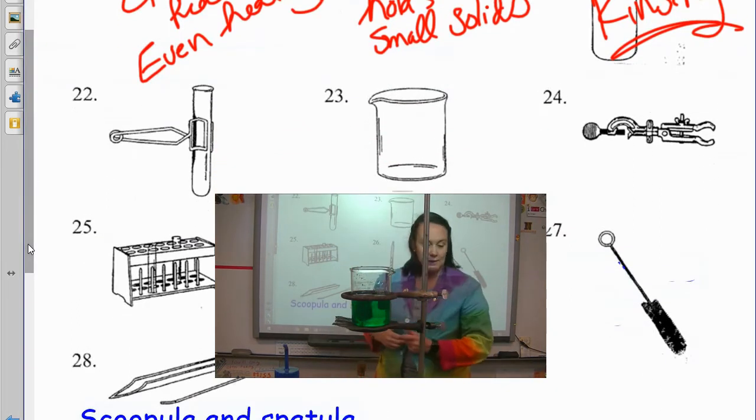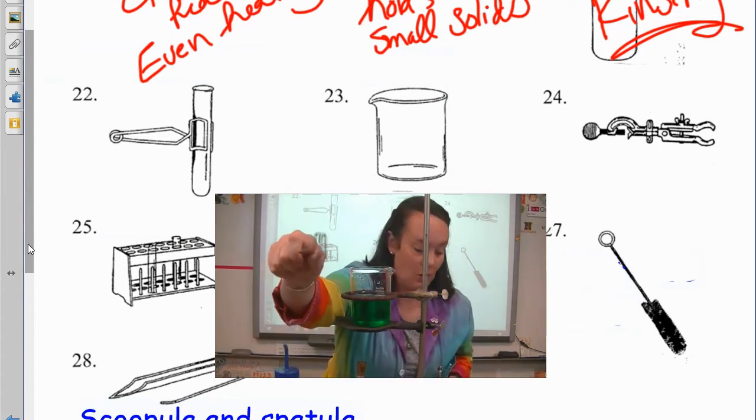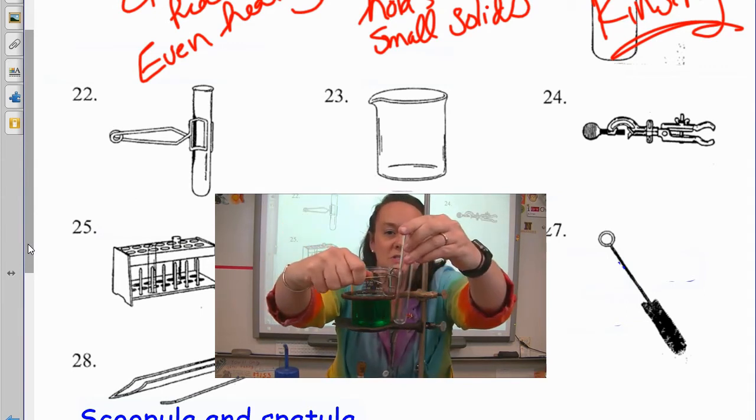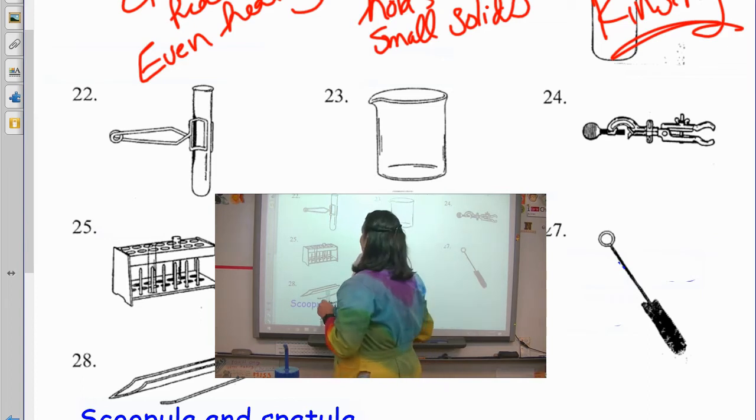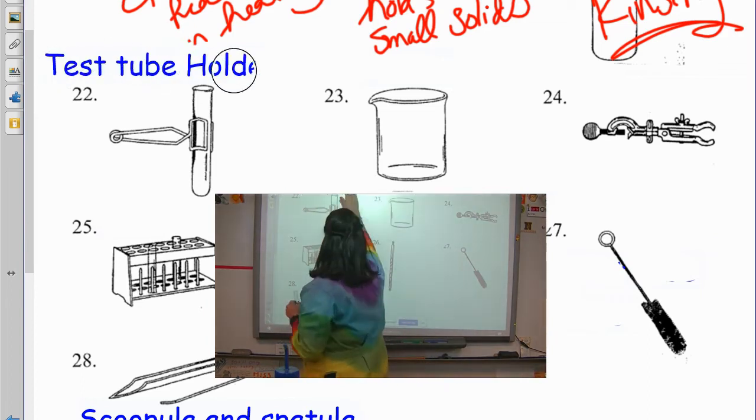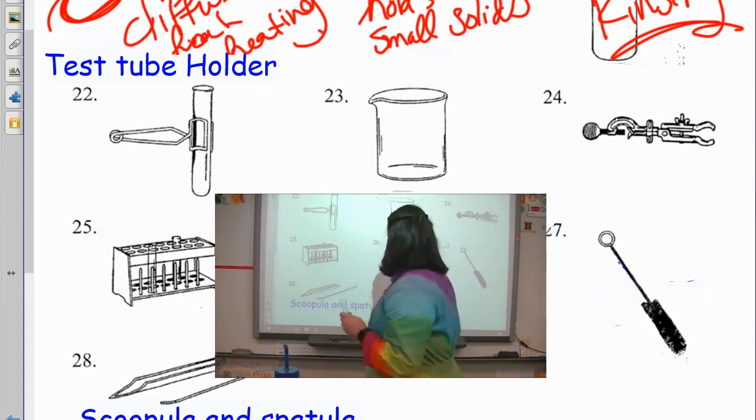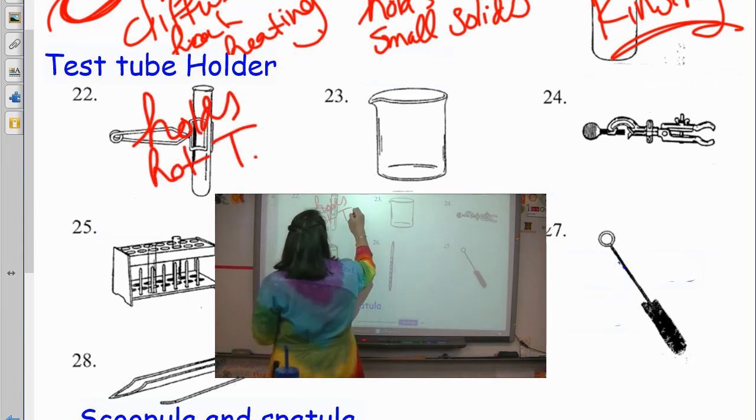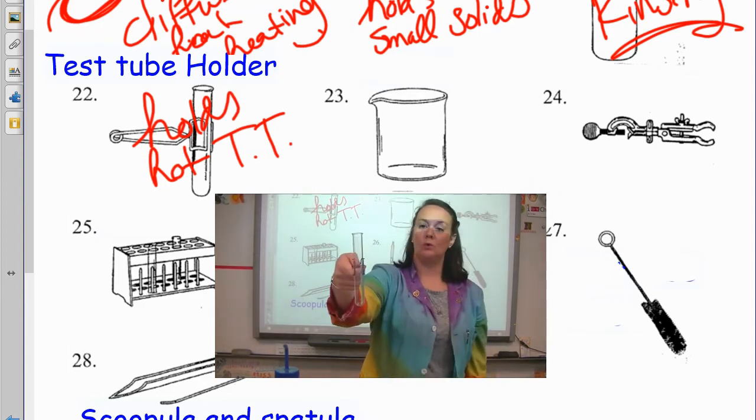Number 22 is something that we have here. Let me find that. Here we go. This guy's really small. You can already see what he does in the picture. What we're going to do is we just take this here. It is called, this is called a test tube holder. Test tube holder. And all that does is that holds hot test tubes. Holds hot test tubes.